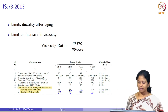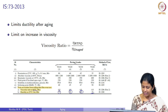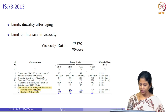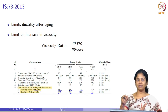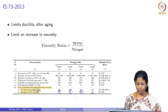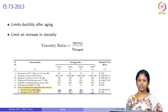Looking at codal provisions from IS code: ductility at 25 degrees Celsius should have a minimum value of 75 for VG10 bitumen, 50 for VG20, 40 for VG30, and 25 for VG40. As we go to higher grades, the ductility requirement reduces. The viscosity ratio at 60 degrees — which is the ratio of RTFO viscosity to unaged viscosity — should be limited to a maximum of 4. This means at the end of short-term aging, the increase in viscosity should not exceed 4 times the unaged condition. There is no specification in this standard related to long-term aging procedure.